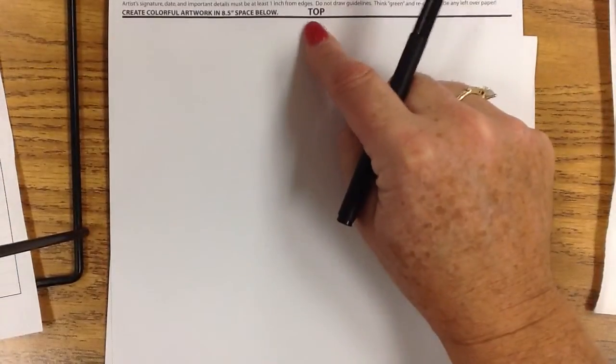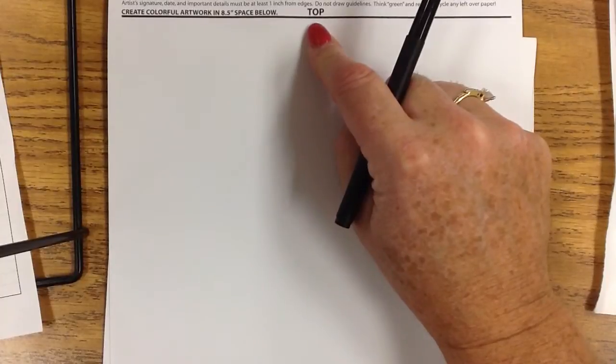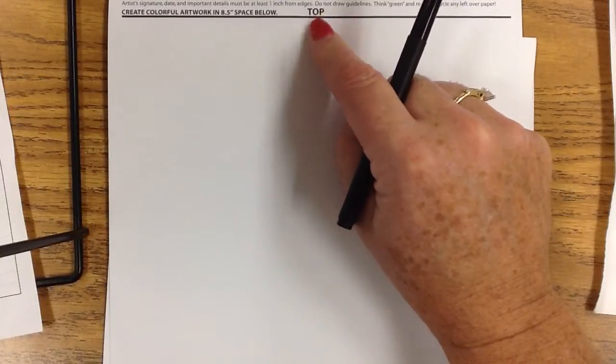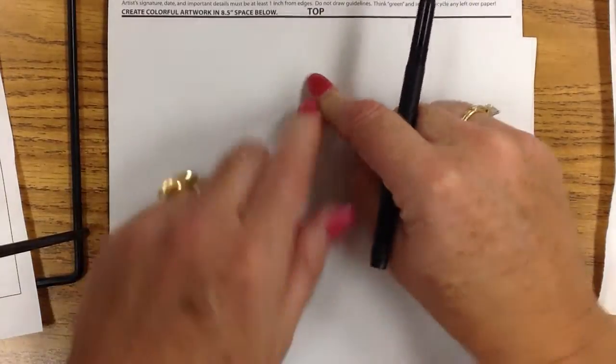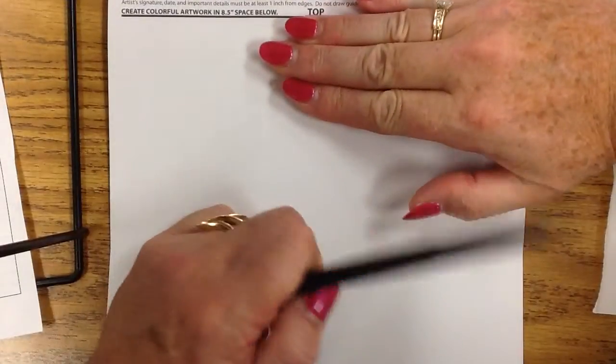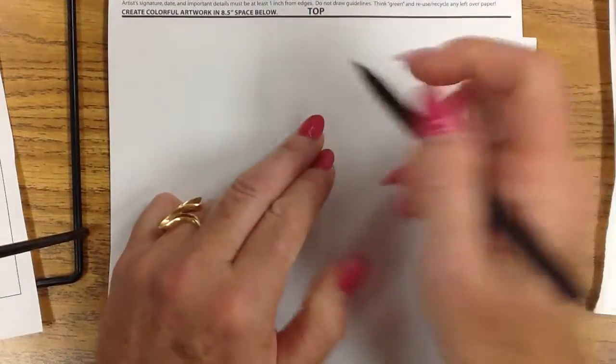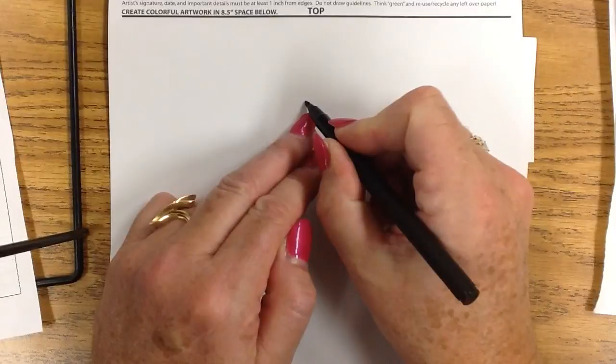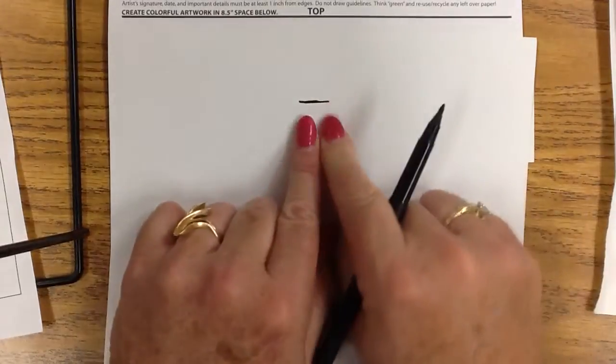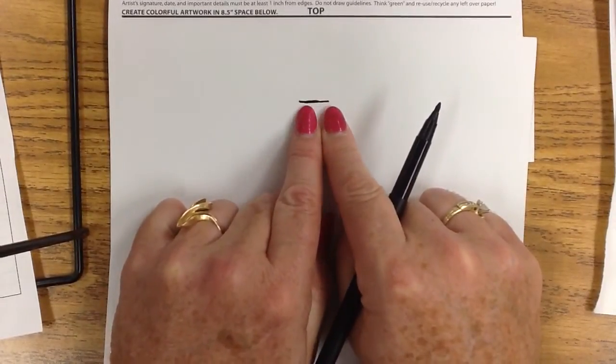But first I'm going to teach you how to make some guidelines. So we're going to read the paper here, and at the paper of the square one art it says top. From that line I'm going to jump down about three fingers, and I'm going to put a guideline, a little line right here. That is going to be the top of my head.